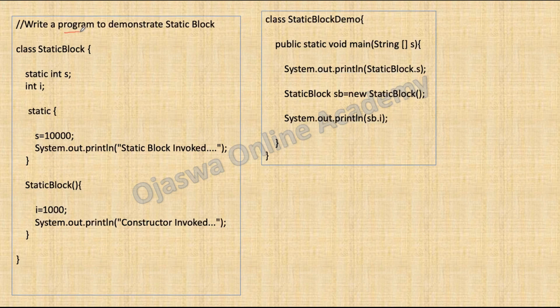Let us write a program to demonstrate how a static block works. We have defined a class named StaticBlock. We have one static variable s and one instance variable i. Here we have defined the static block. The syntax for static block definition is the static keyword, open the curly bracket, close the curly bracket, and you write the code inside.